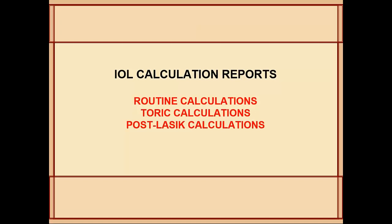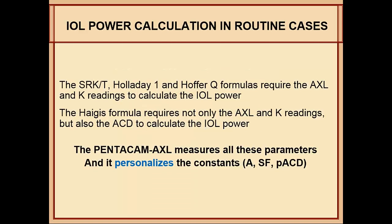The nice part about the Pentacam AXL is that it does routine calculations, toric calculations, and post-LASIK calculations without you having to go to the ASCRS website or do special manual calculations. It's all included in the machine with just a click of a button. As you know, the SRKT, Holladay 1, and Hoffer Q formulas require the axial length and K readings, while the Haag formula requires axial length plus ACD. The Pentacam AXL measures all these parameters with personalized constants.